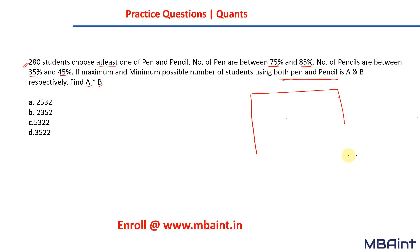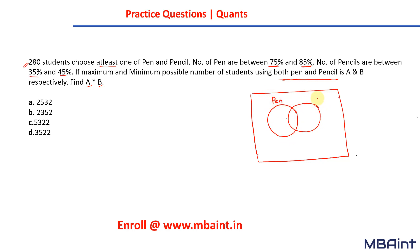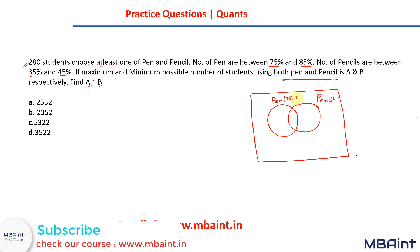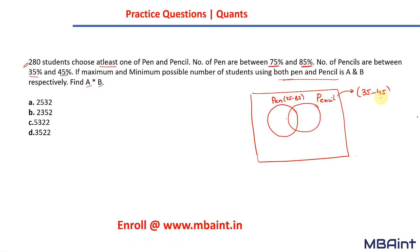This is a simple question of two-set Venn diagram optimization. The first condition is that each student chose at least one of pen and pencil, so there will be no student who chooses neither. In the Venn diagram, the pen region has a range of 75% to 85%, the pencil region has a range of 35% to 45%, and the outside region is zero.